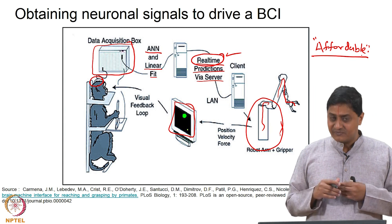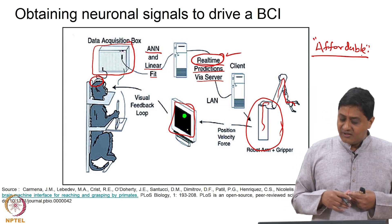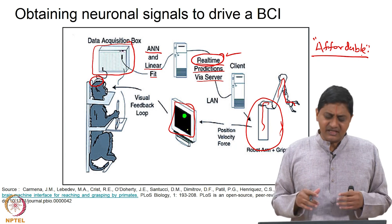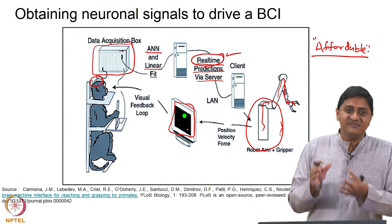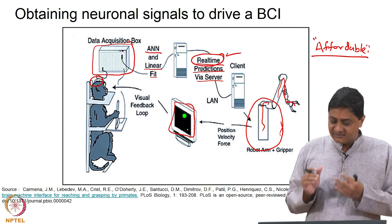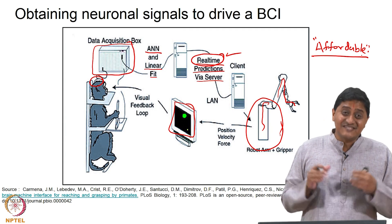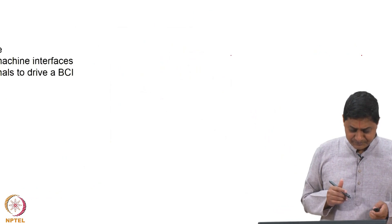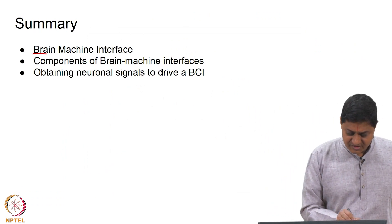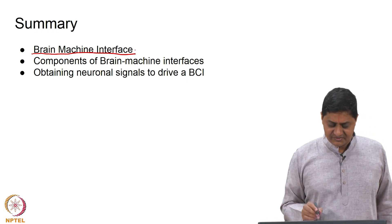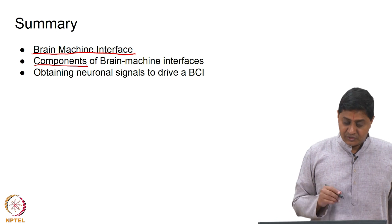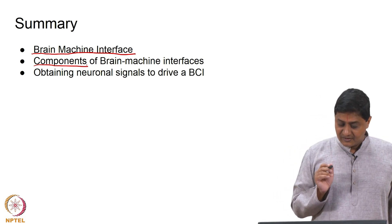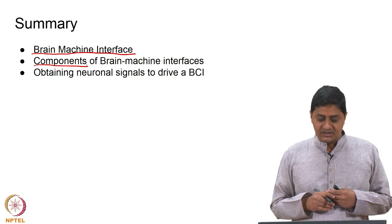Cochlear implants are relatively more commercially successful than movement prosthesis. From time to time we see exciting YouTube videos showing a robot moving by mere thinking — those are cool, but are these things being used by individuals who need them? Are they commercially viable and sustainable? That continues to be the question, and that is one area where people like us can contribute. In this class we have seen what brain-machine interfaces are, discussed their components, and how to obtain neuronal signals from implanted electrodes — noting that with implanted electrodes there are also challenges. With this, we come to the end of this class. Thank you very much.